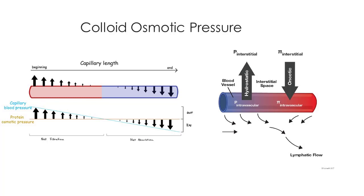Fluid leaks out at the arterial end and is drawn back into the capillary at the venous end because of the protein. That's this capillary fluid cycle — kind of like the hydrologic cycle with evaporation, condensation, and rain. But not all of the fluid goes back into the capillaries; some stays in the interstitial fluid. That's where lymphatic capillaries are going to drain that additional fluid.